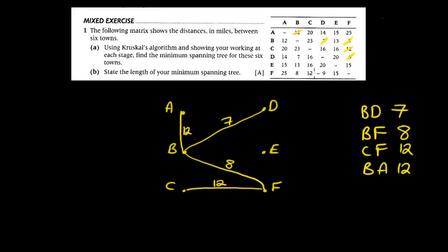What else? 12, 14, no 13 is the next one up, EB, and that won't form a cycle so we can put that on and that's going to be 13 or BE, 13.